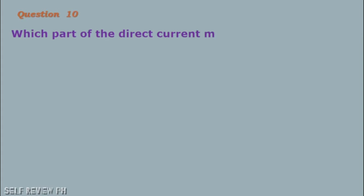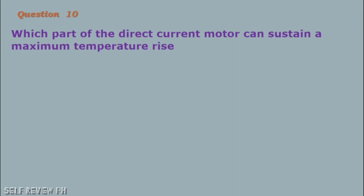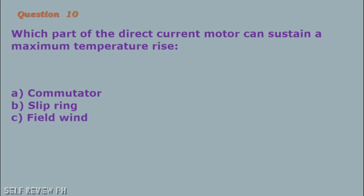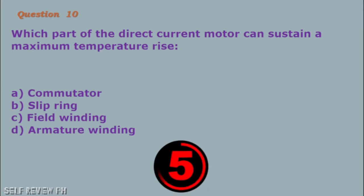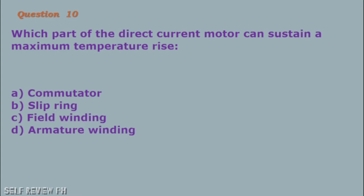Question number 10: Which part of the direct current motor can sustain a maximum temperature rise? A. Commutator B. Slip ring C. Field winding D. Armature winding. The correct answer is letter C, field winding.